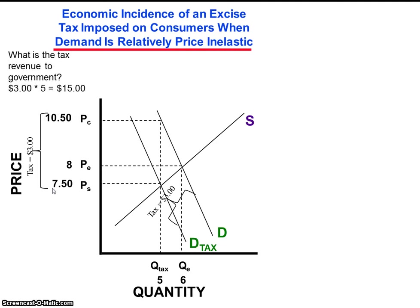The tax revenue to government increases from $12 in our previous analysis to $15 here. Because consumers are relatively insensitive to the price increase resulting from the tax, output doesn't decrease as much. Consequently, there are more units sold, and the tax revenue to government is greater.